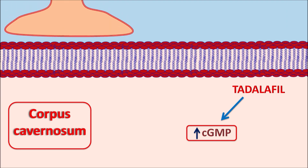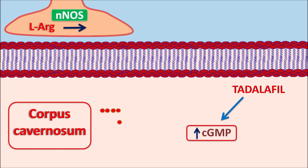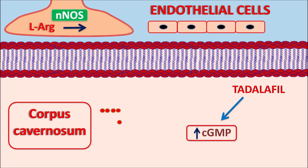Nitric oxide is released from neurons through L-arginine as the precursor. L-arginine can be converted into nitric oxide by the enzyme nitric oxide synthase. This nitric oxide can enter into the corpus cavernosum. Similarly, nitric oxide can also be released from the endothelial cells. The increased levels of nitric oxide within the corpus cavernosum can stimulate cyclic GMP levels, which produce relaxation of the smooth muscle. So Tadalafil is going to increase the cyclic GMP levels by promoting the action of nitric oxide.